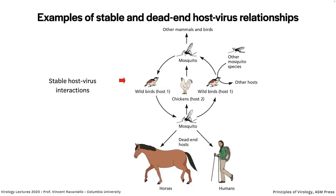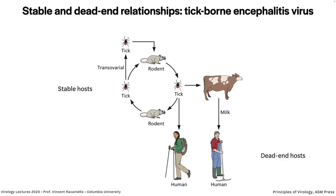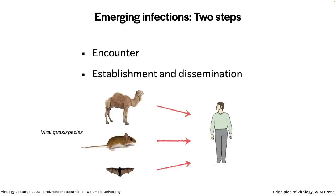Periodically, mosquitoes bite dead-end hosts like horses or humans — the virus reproduces and can make them sick, but it will not transmit to others because there's not enough virus in the blood for a mosquito to pick up and transfer. Another example involves ticks: ticks carry viruses among rodents, and occasionally they bite accidental hosts like humans or cows. These are dead-end hosts, though a cow can transmit the virus to humans through milk.